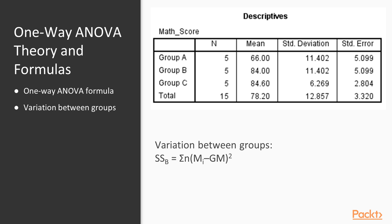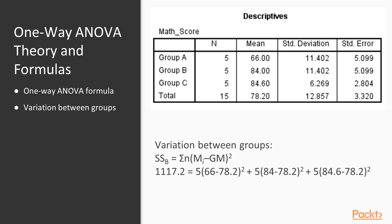The second source of variation is variation between groups. Here we take the mean of each individual group, subtract the grand mean, square that difference, multiply it by the number of cases in each group, and then add all of that information together.